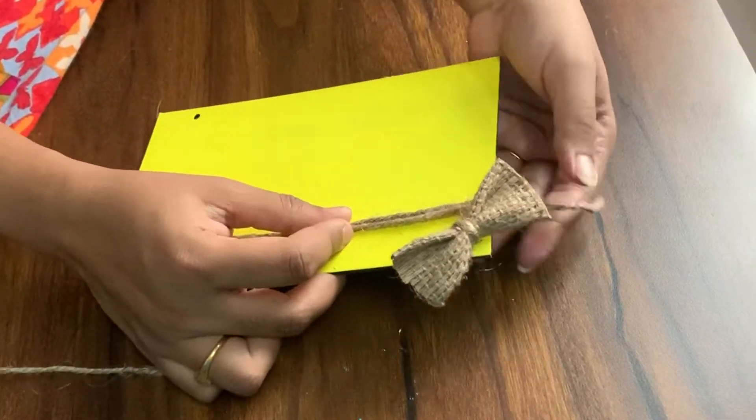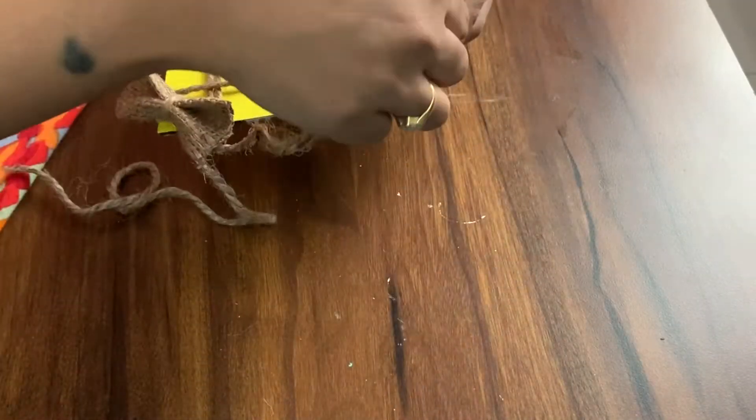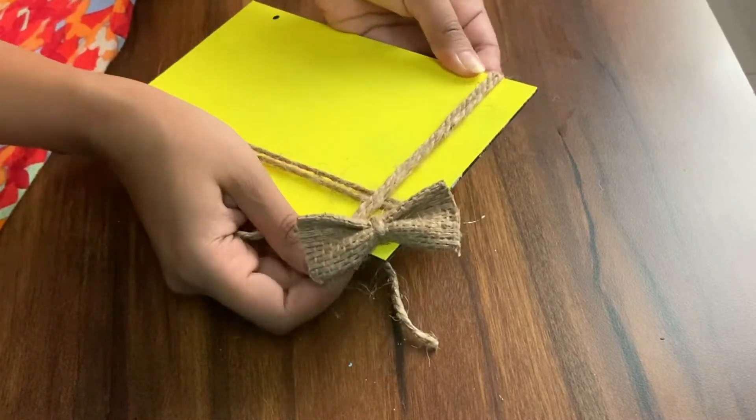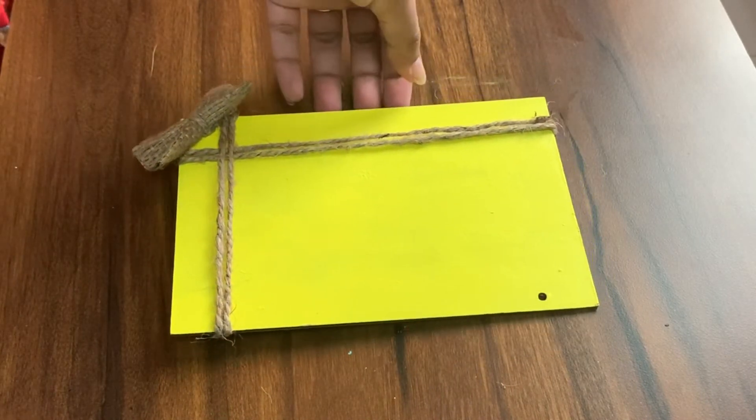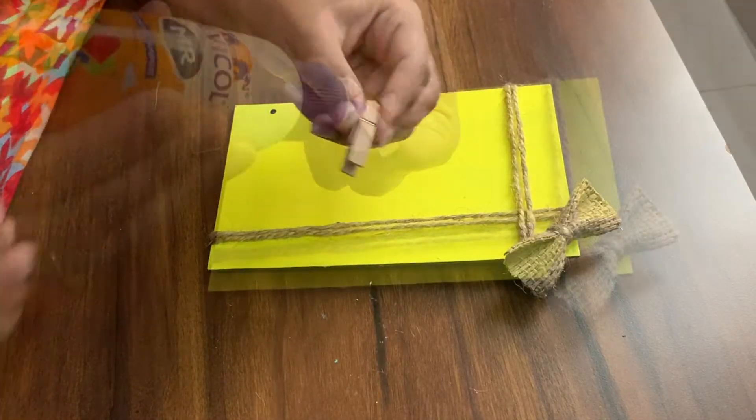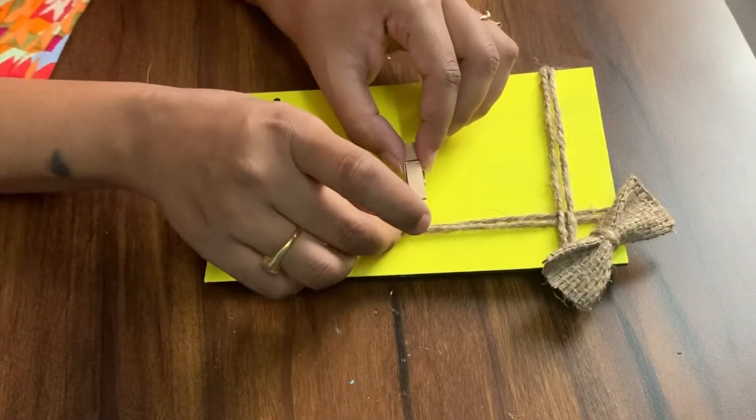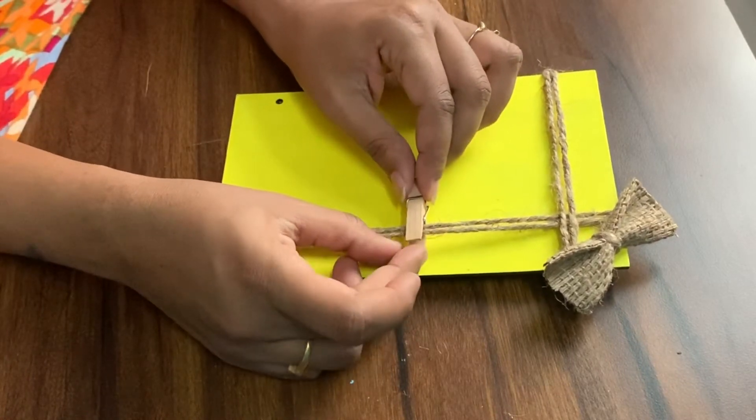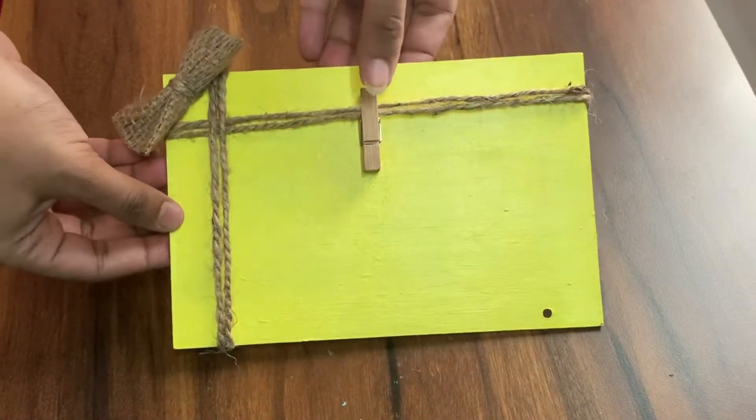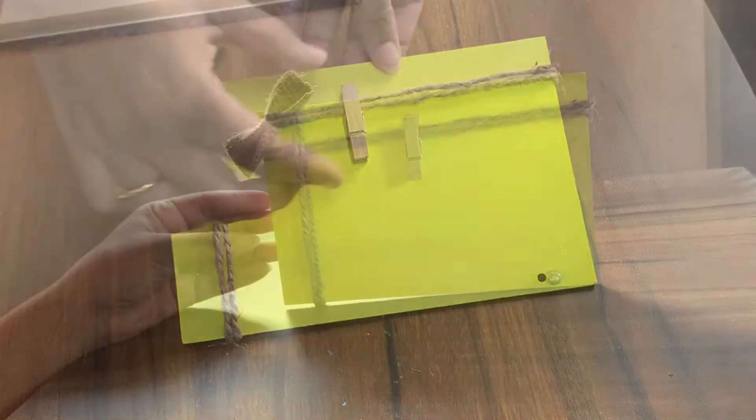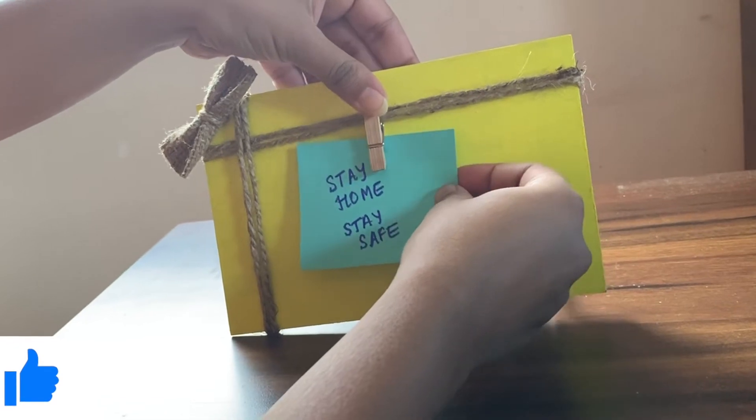With the glue, now we will take a wooden clip. This is easily available in any store or online. And the photo frame is ready. I don't have a photo for it, so I am just attaching a sticky to show you how it looks.